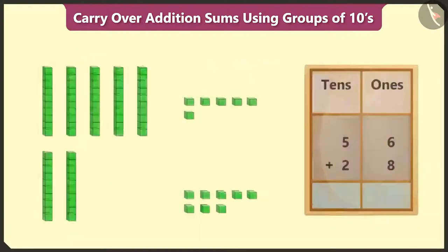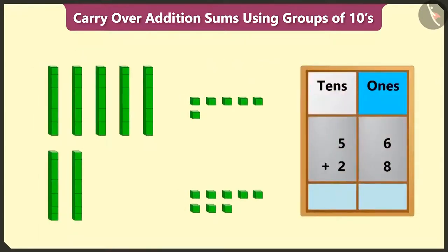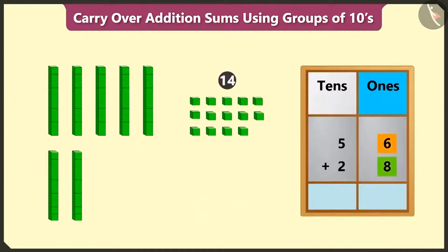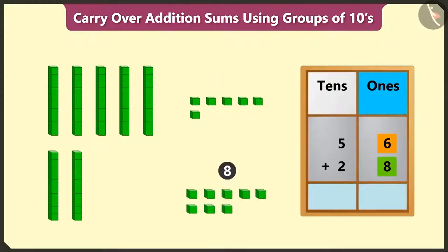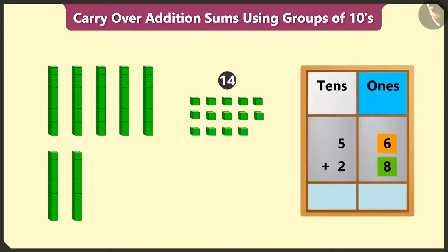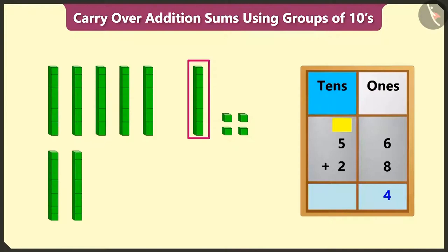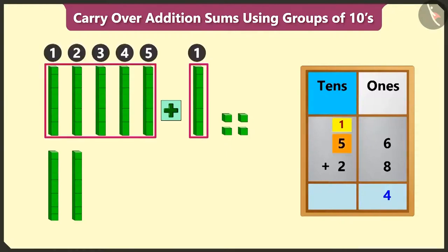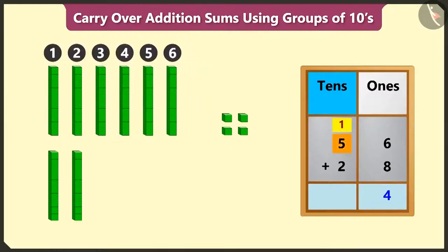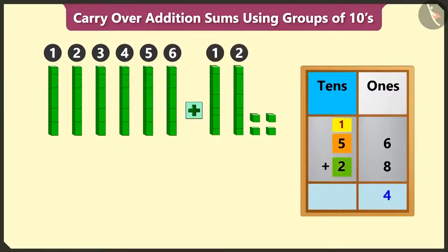And then? First of all, we will add the numbers in the ones place. 6 ones added to 8 ones will equal 14. This means 6 ones and 8 ones added together equal 14 ones. Out of 14 ones, we can form a group of 1 ten. So, 14 has 1 ten and 4 ones. Now, we have to write 4 in the ones box and carry over 1 ten in the tens box. Now, adding 1 and 5 will make 6, and 6 added to 2 will make 8.